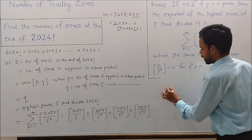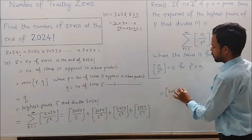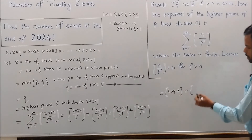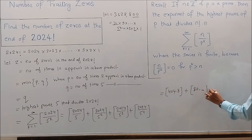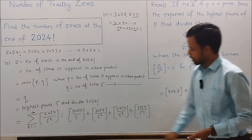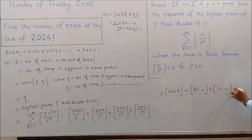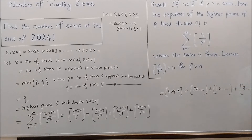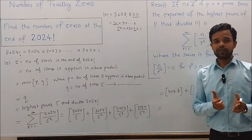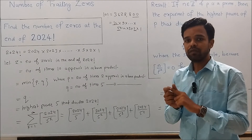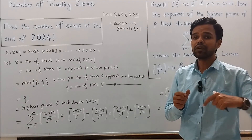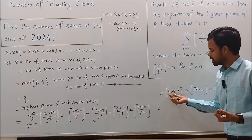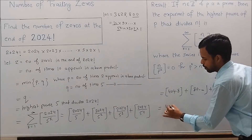Computing each term: floor(2024 / 5) = floor(404.8) = 404; floor(2024 / 25) = floor(80.96) = 80; floor(2024 / 125) = floor(16.19) = 16; floor(2024 / 625) = floor(3.24) = 3. By the definition of the floor function, floor(x) is the greatest integer less than or equal to x.